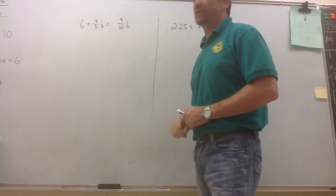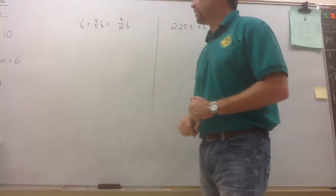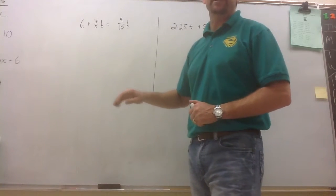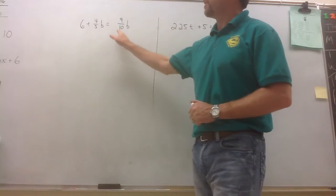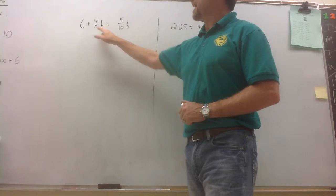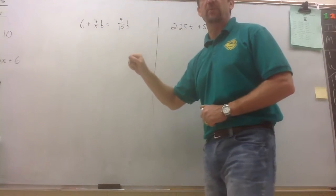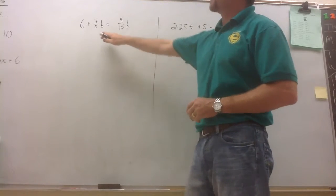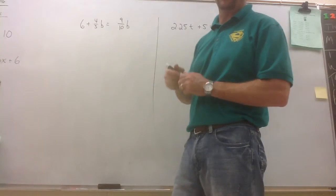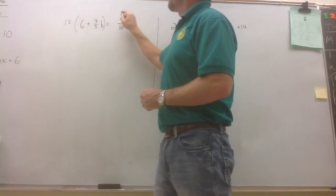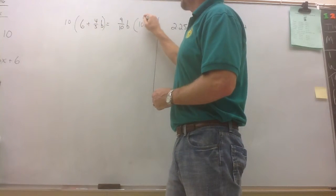If you notice, we have over here 6 plus 4 fifths b equals 9 tenths b. The trick to eliminating fractions is you need to find the least common multiple of your denominators. So what's the lowest common multiple of 5 and 10? The number that they both go into would be 10. So we're going to clear the fractions by multiplying everything on both sides of the equation by 10.